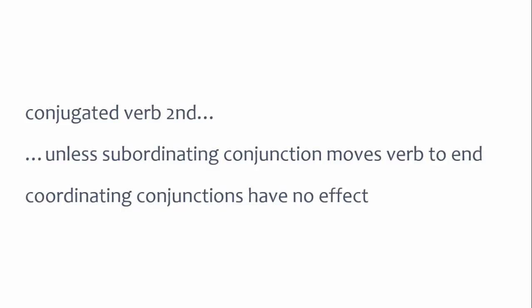To summarize, conjugated verbs are the second element in the clause unless you use a subordinating conjunction, which moves the conjugated verb to the end of the clause. Coordinating conjunctions leave the position of the verb alone.